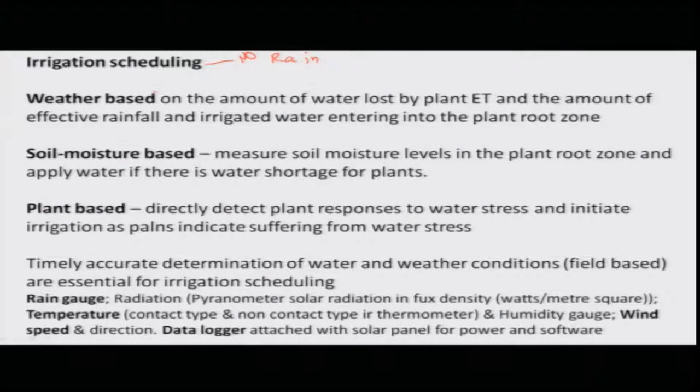It is based on weather - temperature at that area and evapotranspiration also causes losses. If temperature is more, then losses will be more. The second is soil moisture based irrigation - how much water is available in the root zone, and based on that, the balance needs to be irrigated. The third one is plant-based: if there is water stress and plants are suffering from water shortage, we need to give irrigation accordingly.